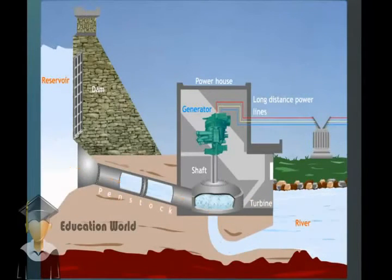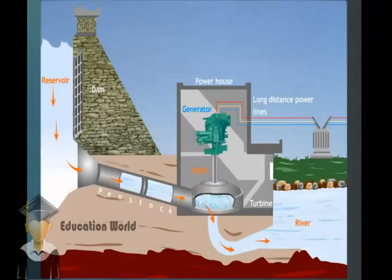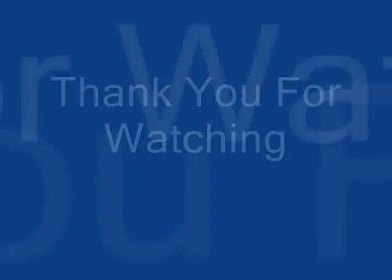The turbine, in turn, rotates the shaft that is connected to the coils of a generator. These coils are placed in between strong magnetic poles. The rotating shaft turns the coils. The change in magnetic field due to the movement of the turbine generates electricity.